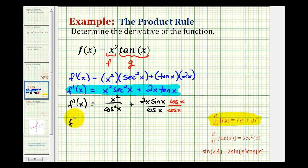So now we're going to have a common denominator of cosine squared x, and the numerator is going to be x squared plus two x sine x cosine x. Notice our numerator does have a common factor of x. Let's go ahead and factor that out.